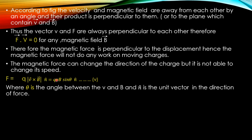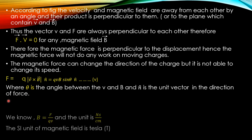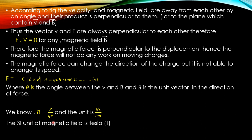The magnetic force FM = qvB sinθ · n-cap, equation number five, where theta is the angle between V and B, and n-cap is the unit vector in the direction of force. Accordingly, B = F / (qv sinθ), and the unit of magnetic field is Newton-second per coulomb-meter, which is Tesla (T). Tesla is the unit named after the scientist Tesla.